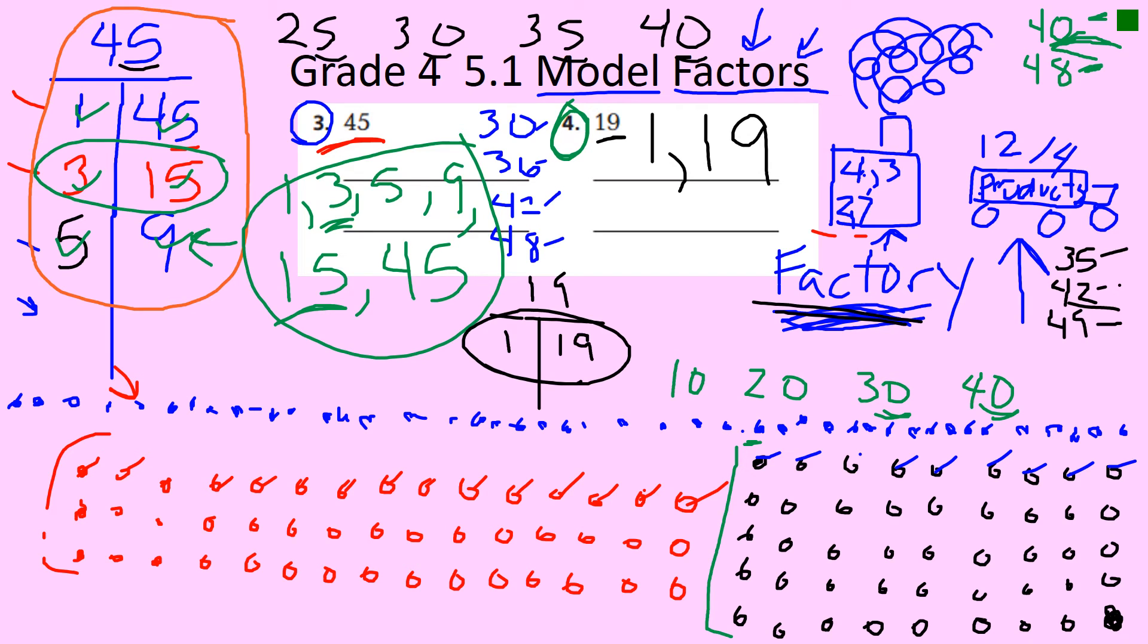So the only two factors of 19 are 1 and 19. You can model this by doing [drawing 1 row of 19]. And if you want to try on your grid paper all those other numbers, you can try that. But that makes 19 a really special number - that's called a prime number. You guys are going to learn about those later. Looking at this slide, my goodness, we did a lot on this page. You learned the factors of 45 and the factors of 19.